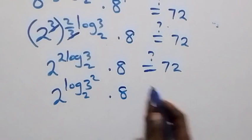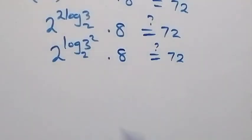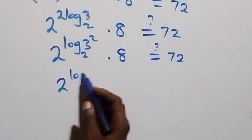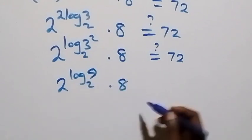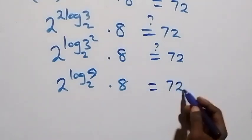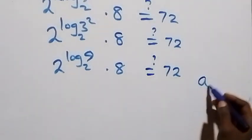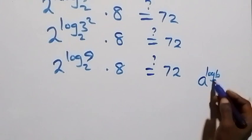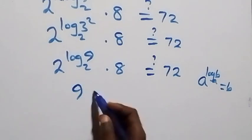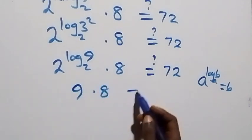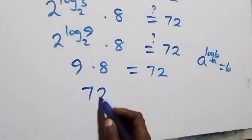Here, 2 raised to power log base 2 of (3 squared) equals 9. So this becomes 9 times 8, which equals 72. This follows from the identity a raised to power log base a of b equals b — the same thing as 9 times 8 equals 72.